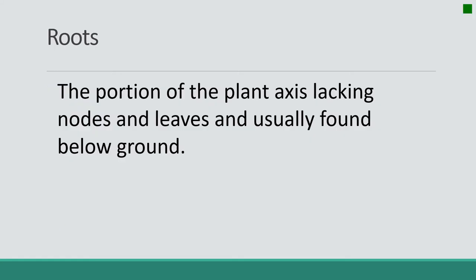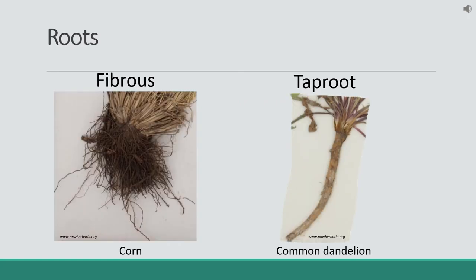Roots are the portion of the plant axis lacking nodes and leaves, and usually found below ground. Our two groups are split into fibrous roots and taproots: our grasses and grasslikes will have fibrous root systems, whereas our forbs and shrubs will have taproot systems. A taproot is where one primary large root goes deep into the ground and secondary roots come off of it, whereas a fibrous root system has no primary root — it's just a large mat.